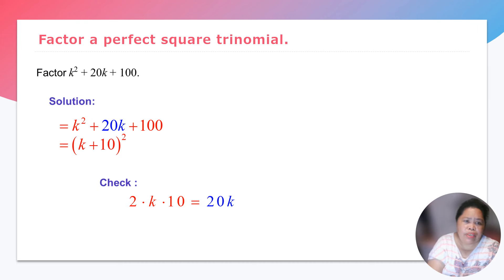Okay, for example, we have k squared plus 20k plus 100. So our solution is k squared plus 20k plus 100. That's k plus 10 squared. So by checking, we have 2 times k times 10, that's 20k. Because your middle term should coincide with your answer. That's it.